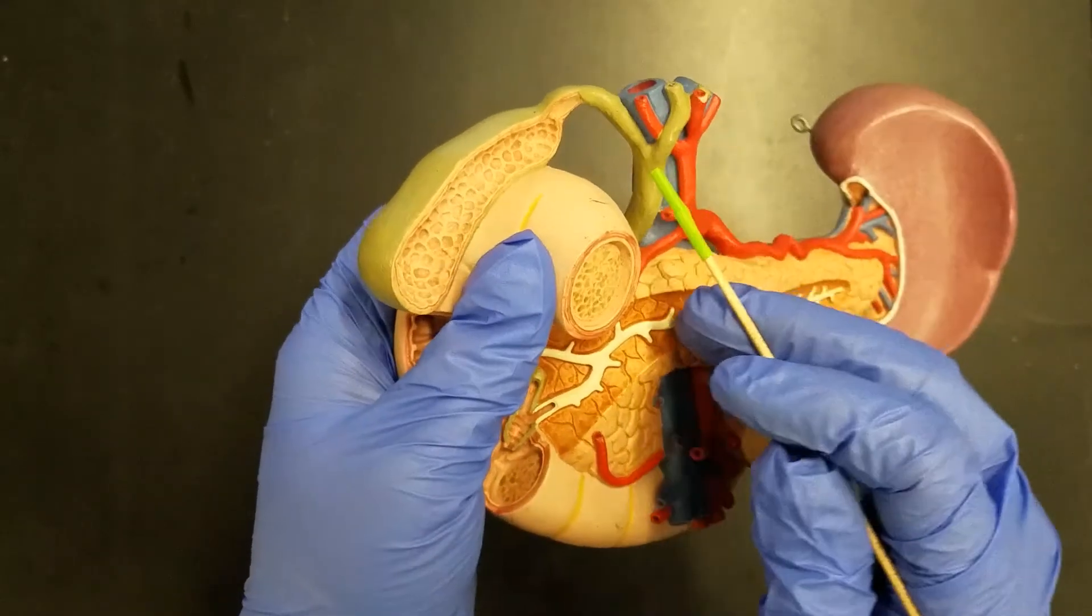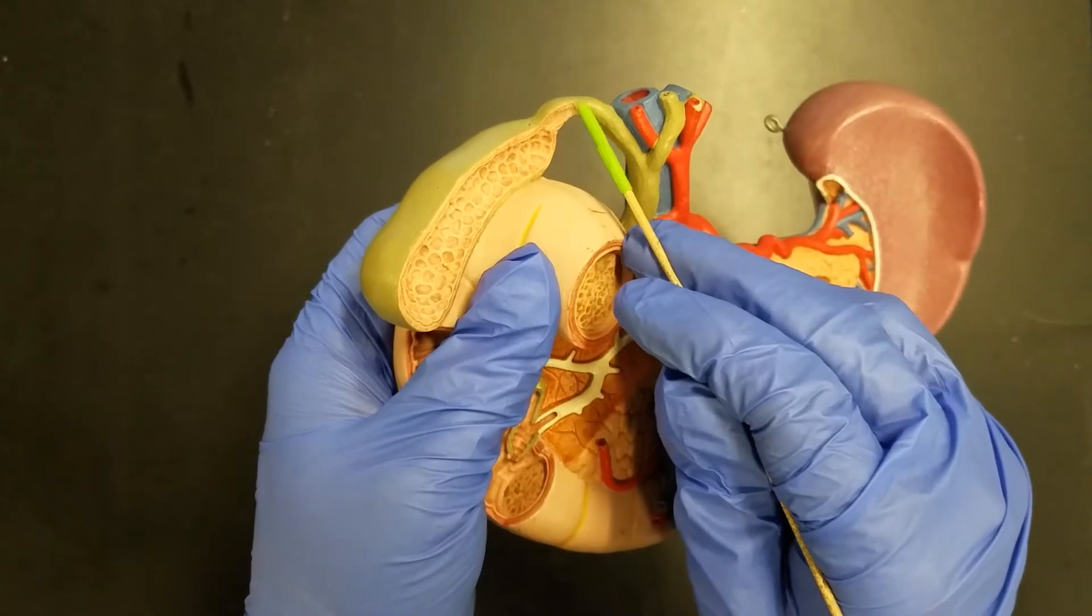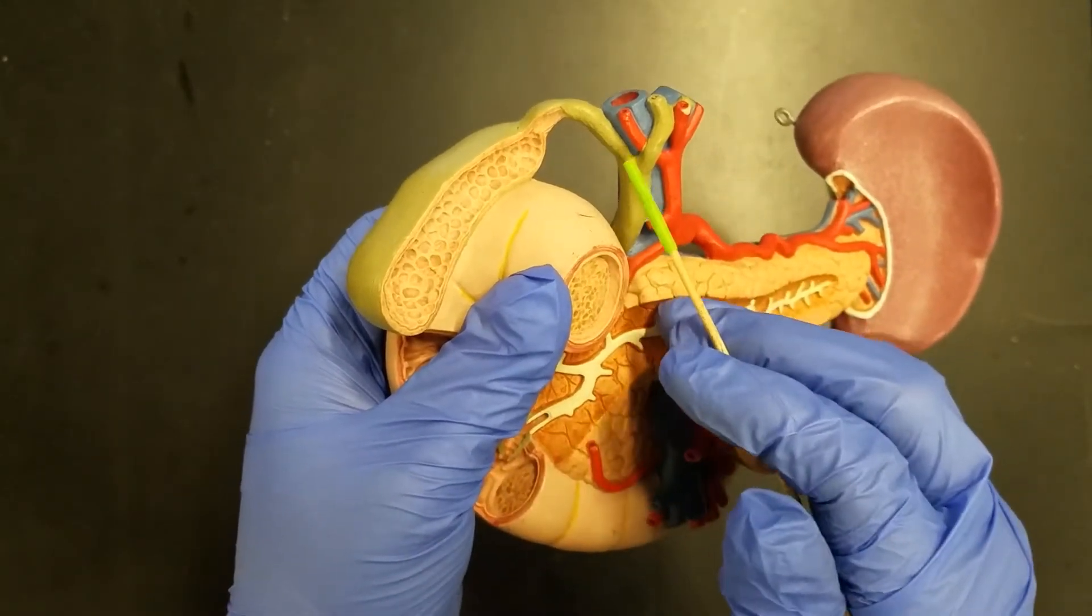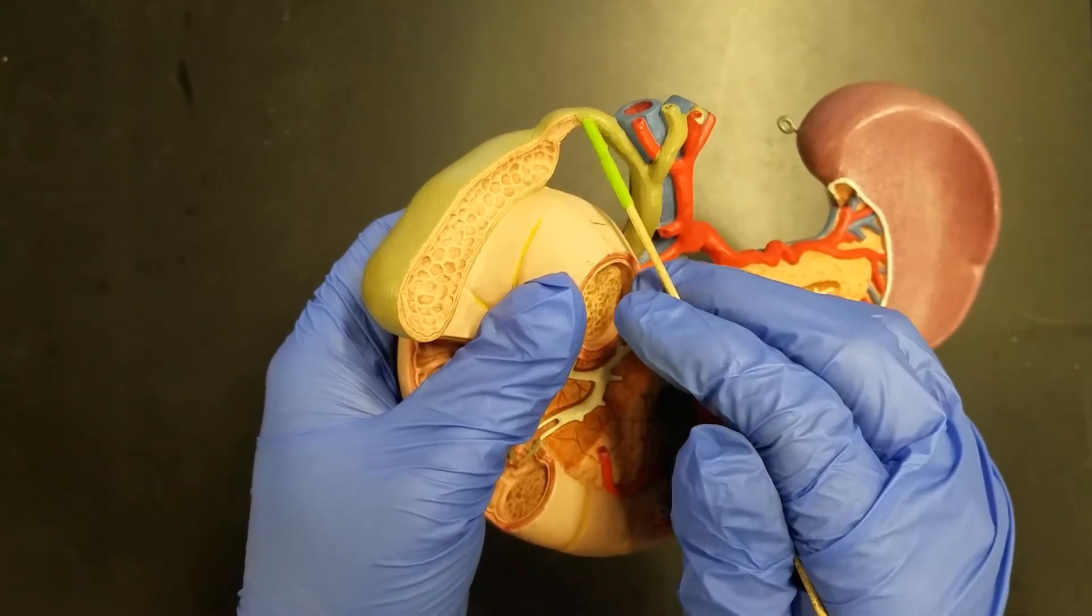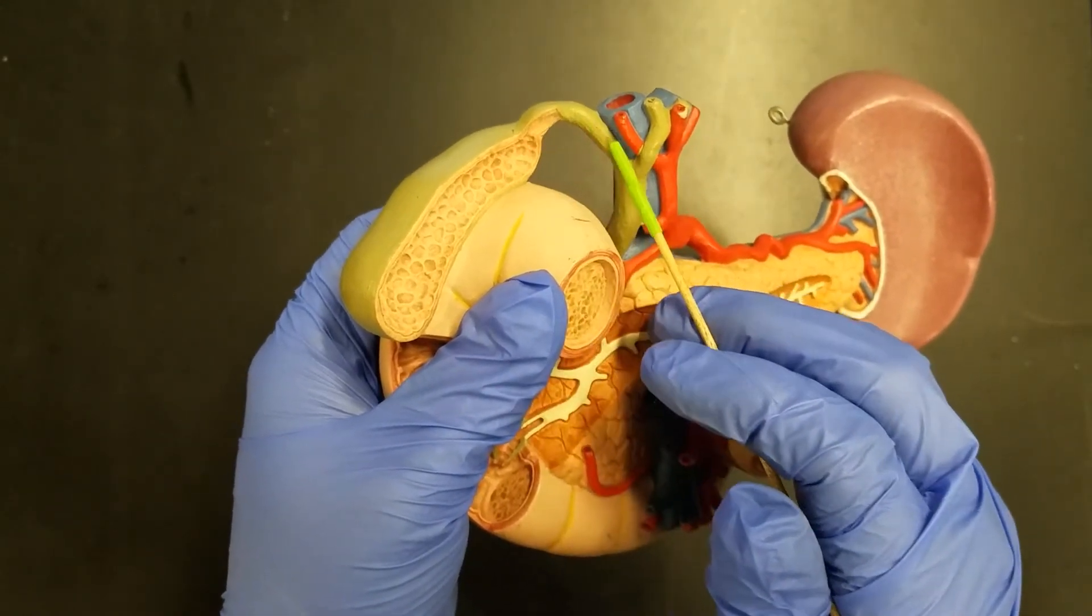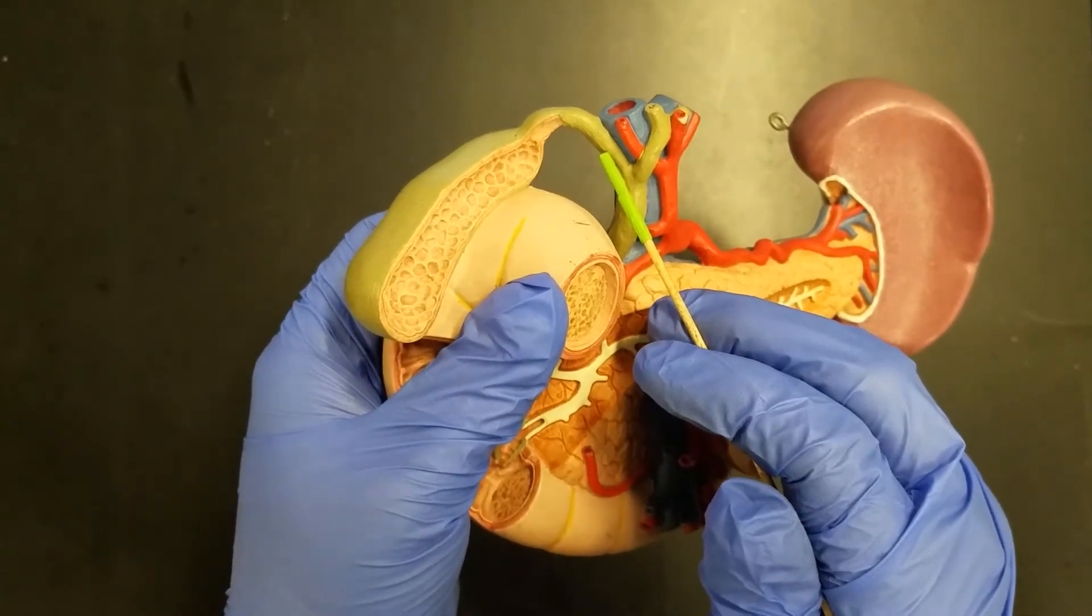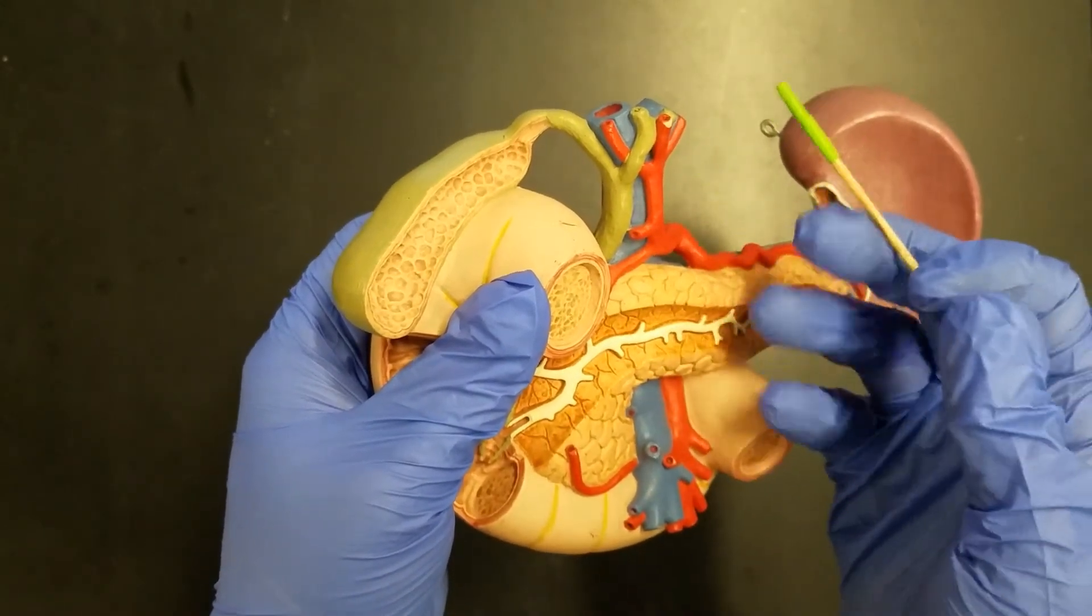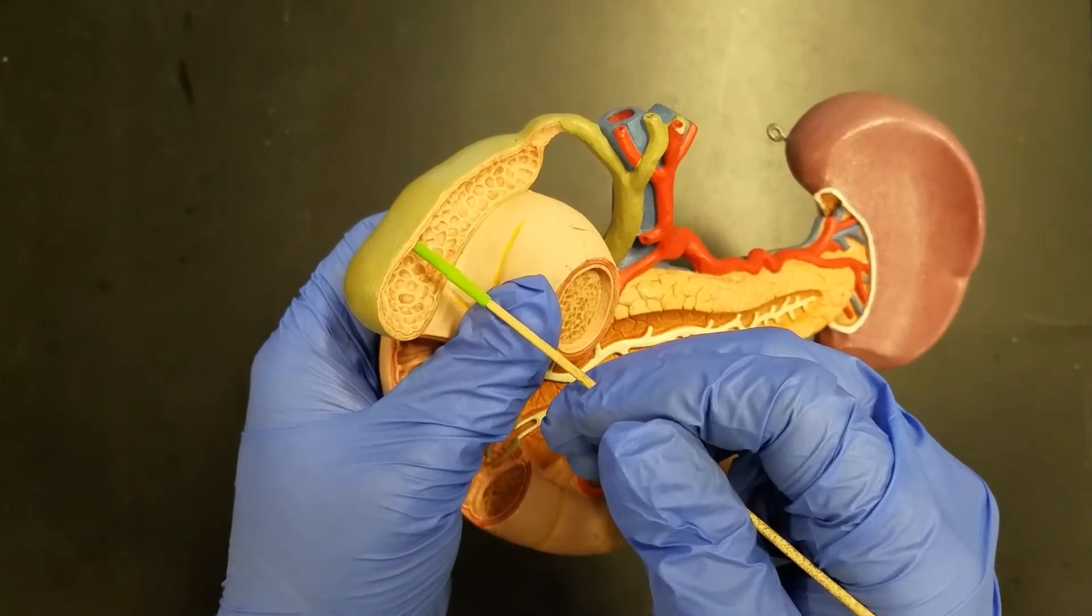Now notice how coming off to the side, we have this passageway that goes over to our gallbladder. This passageway is known as the cystic duct. Cystic comes from a Greek word that means bladder, so cystic duct essentially means bladder duct because it's going to the gallbladder.